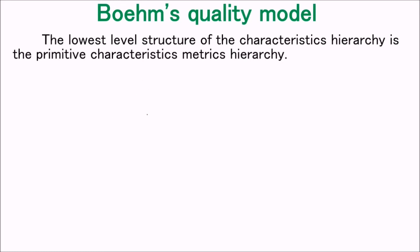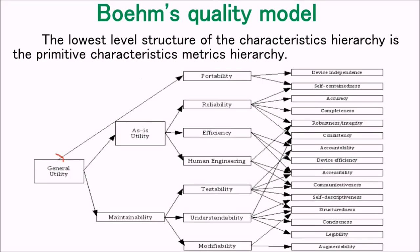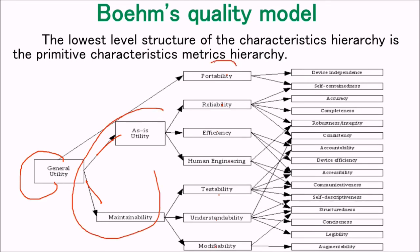In Boehm's quality model, the lowest level is the primitive characteristic metric hierarchy. The general utility includes as-is, maintainability, portability, reliability, efficiency, human engineering, testability, understandability, and modifiability. The lowest level also includes device dependency and self-containedness, which relate to the middle level in various ways. For example, structuredness has relationships with modifiability, understandability, and testability.